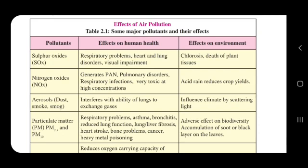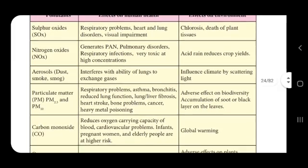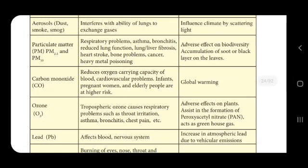Nitrogen oxides (NOx) — NO2, NO3, NO4 — generate peroxy acetyl nitrate (PAN), which is responsible for photochemical smog. NOx is also very toxic in high concentration and contributes to acid rain formation. Both SOx and NOx play a role in forming sulfuric acid and nitric acid through acid rain, which reduces crop yield.